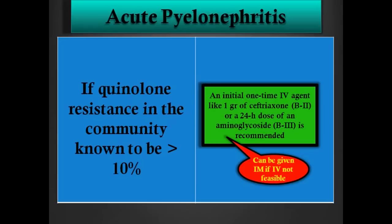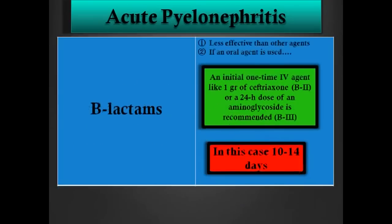Using a broad-spectrum cephalosporin for just 24 hours is a good option when you're not sure what organism is present. For acute pyelonephritis, beta-lactams are totally less effective than the other agents discussed. If you choose to use cefuroxime or other oral cephalosporins, again an initial one-time agent like ceftriaxone or an aminoglycoside is recommended, and in that case you will treat for 10 to 14 days — compared to five days with levofloxacin. Beta-lactams are not highly recommended for urinary tract infections unless the organism is susceptible and no other options exist.